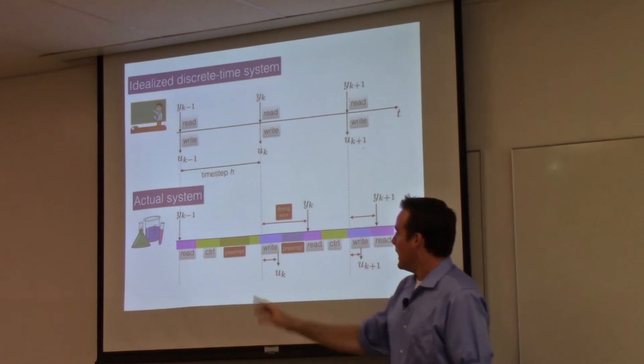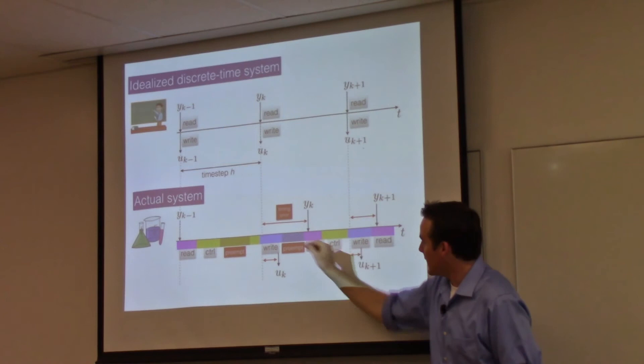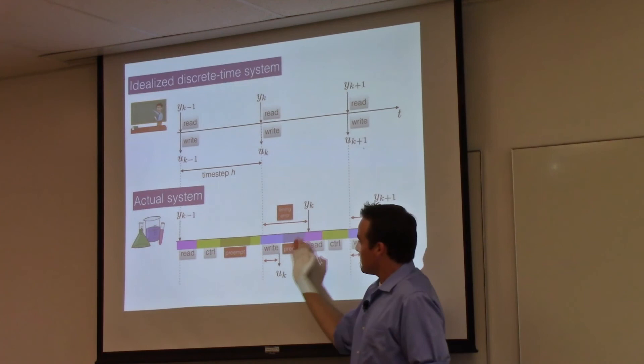Finally, your control algorithm figures out what it wants to write, but it takes a while to physically change the actuator, and you don't know where in this writing command that happens. By the time all these preemptions and computation times add up, you might get some timing error. It might not execute the way that you wanted.